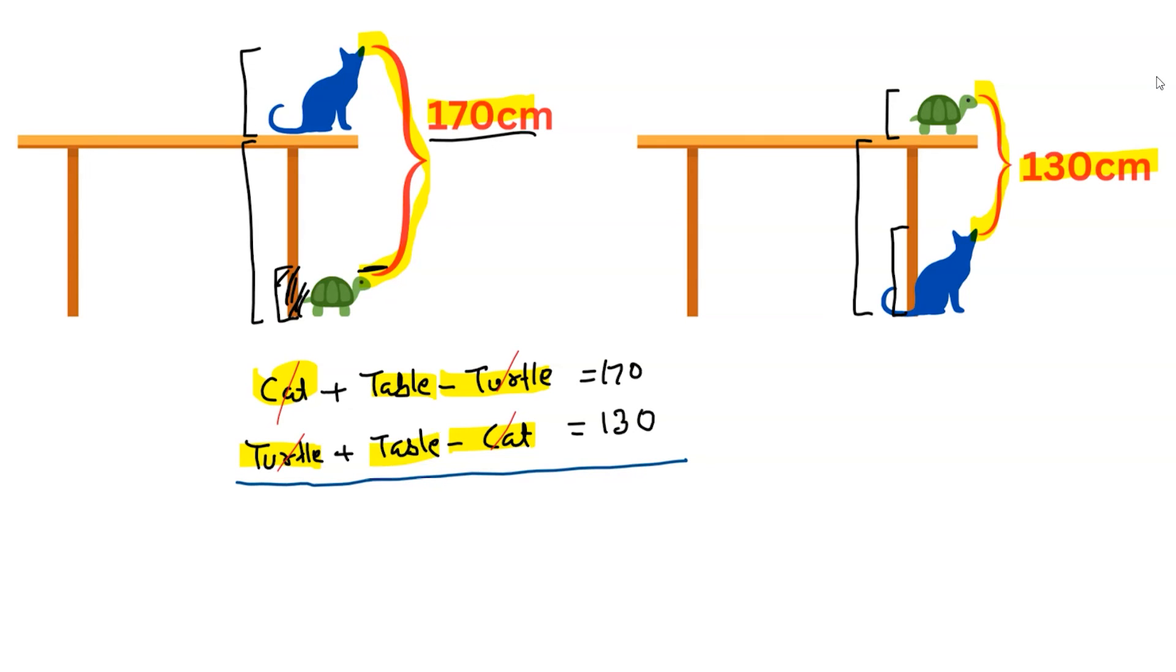Now only table and table will be left. So it will be two times the height of table equals 170 plus 130, which is 300. So the height of table is 300 divided by 2, which is 150 centimeters. So this is the answer. Thank you.